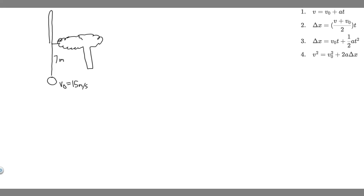In this problem, we're told you throw a ball straight up with an initial velocity of 15 meters per second. It passes a tree branch on the way up at a height of 7 meters. How much additional time will pass before the ball passes the tree branch on its way back down?